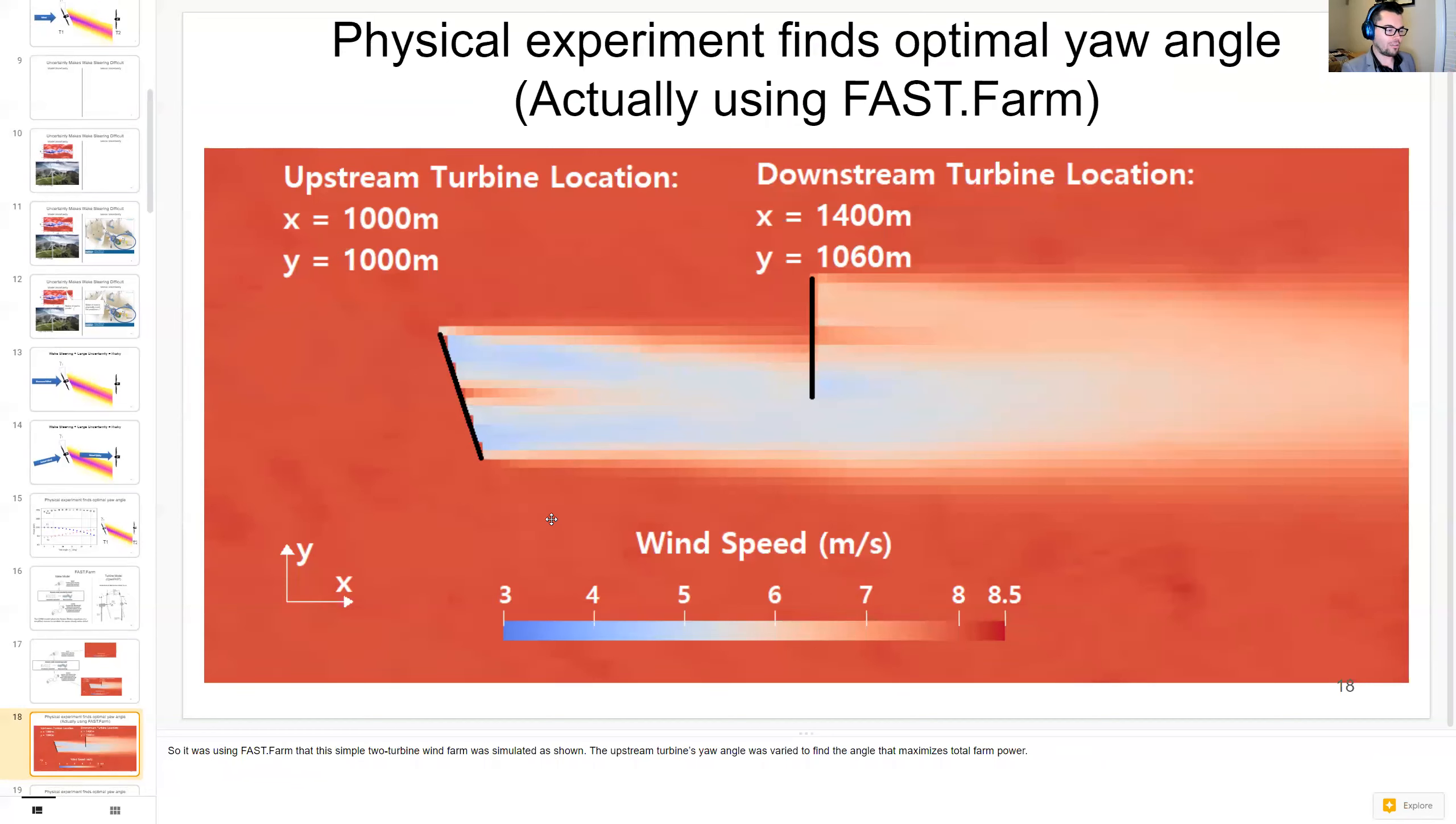So it was using FAST.Farm that this simple two-turbine wind farm was simulated as shown. The upstream turbine's yaw angle is varied to find the angle that maximizes the total farm power.